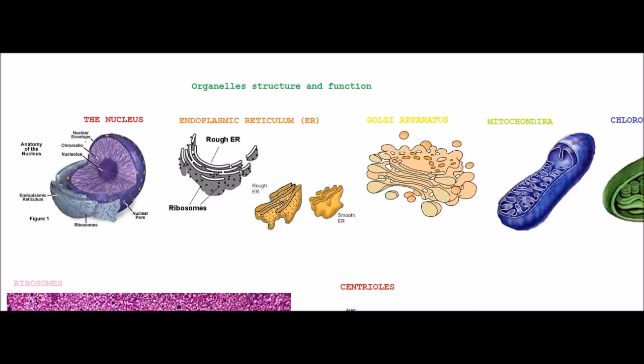We know that the Nucleus is the largest organelle. When stained it shows darkened patches known as chromatin. It is surrounded by a nuclear envelope.